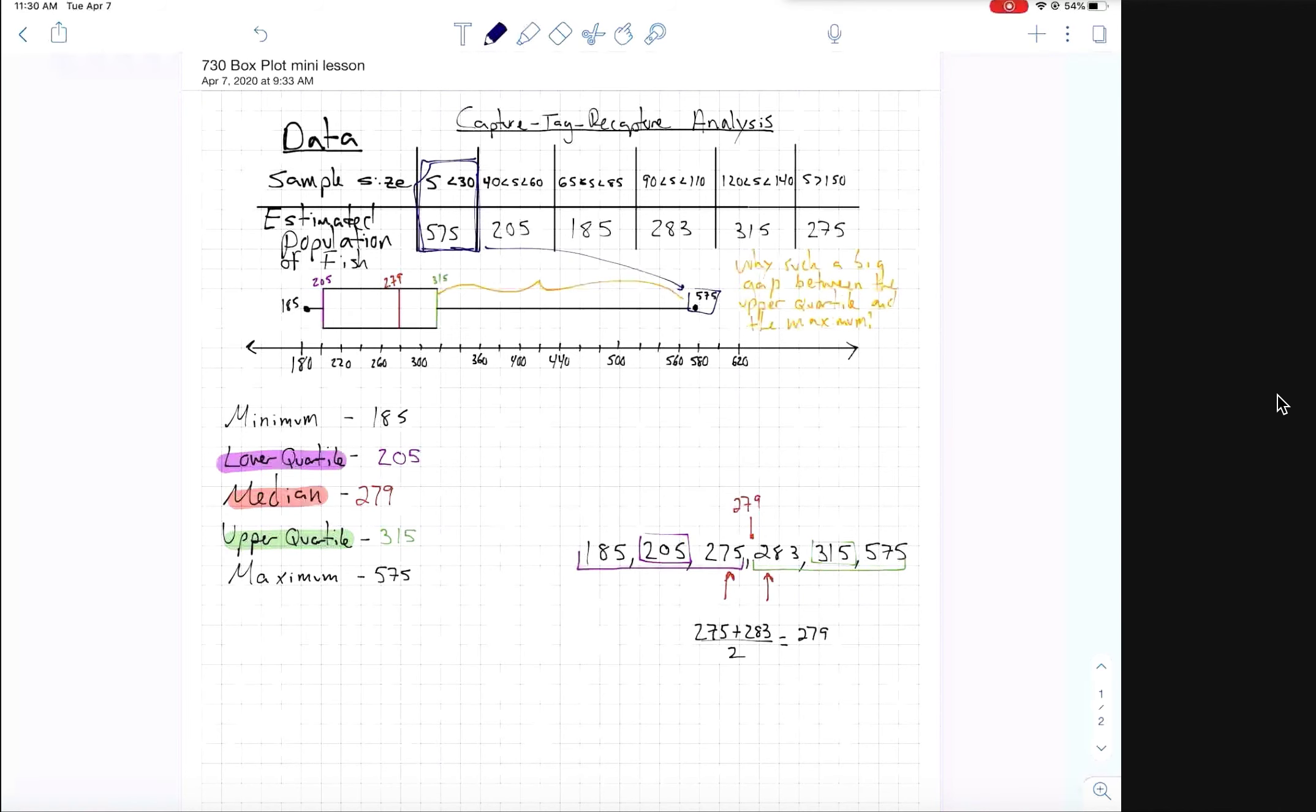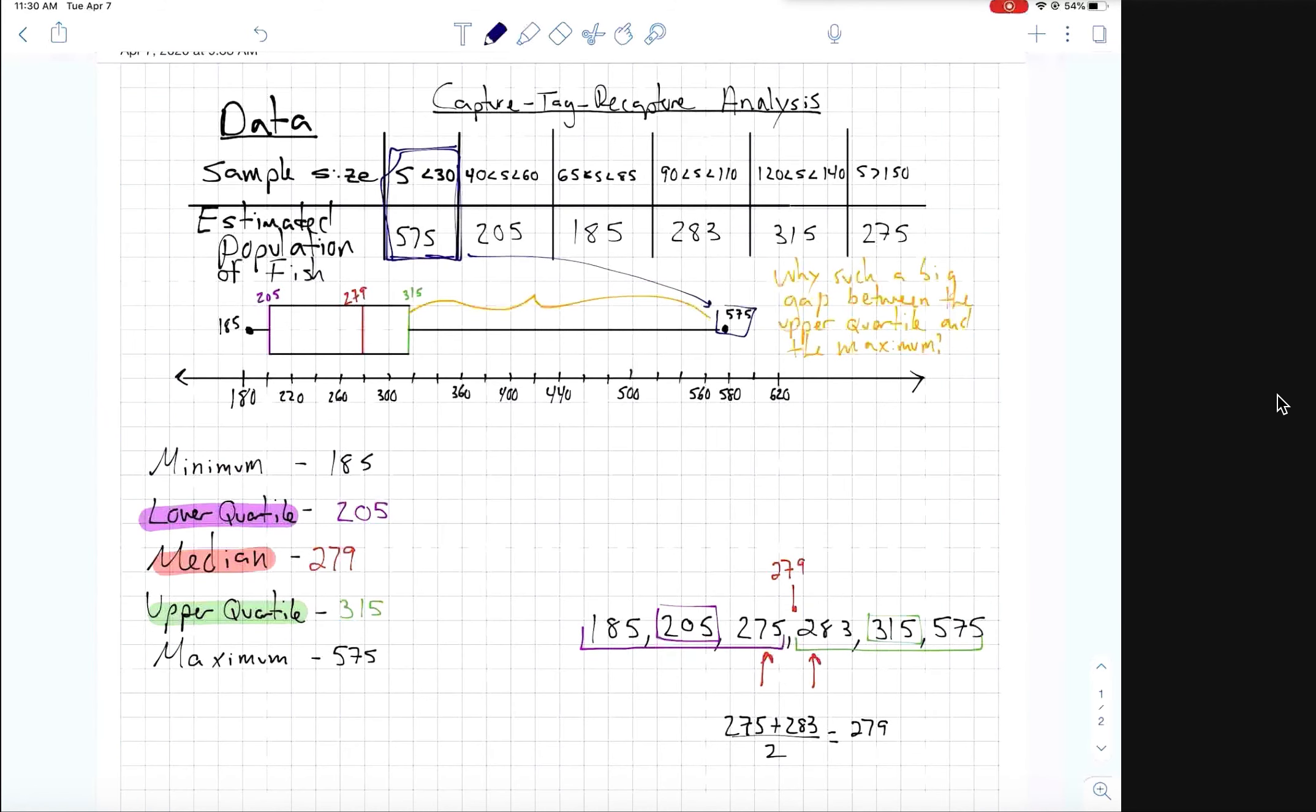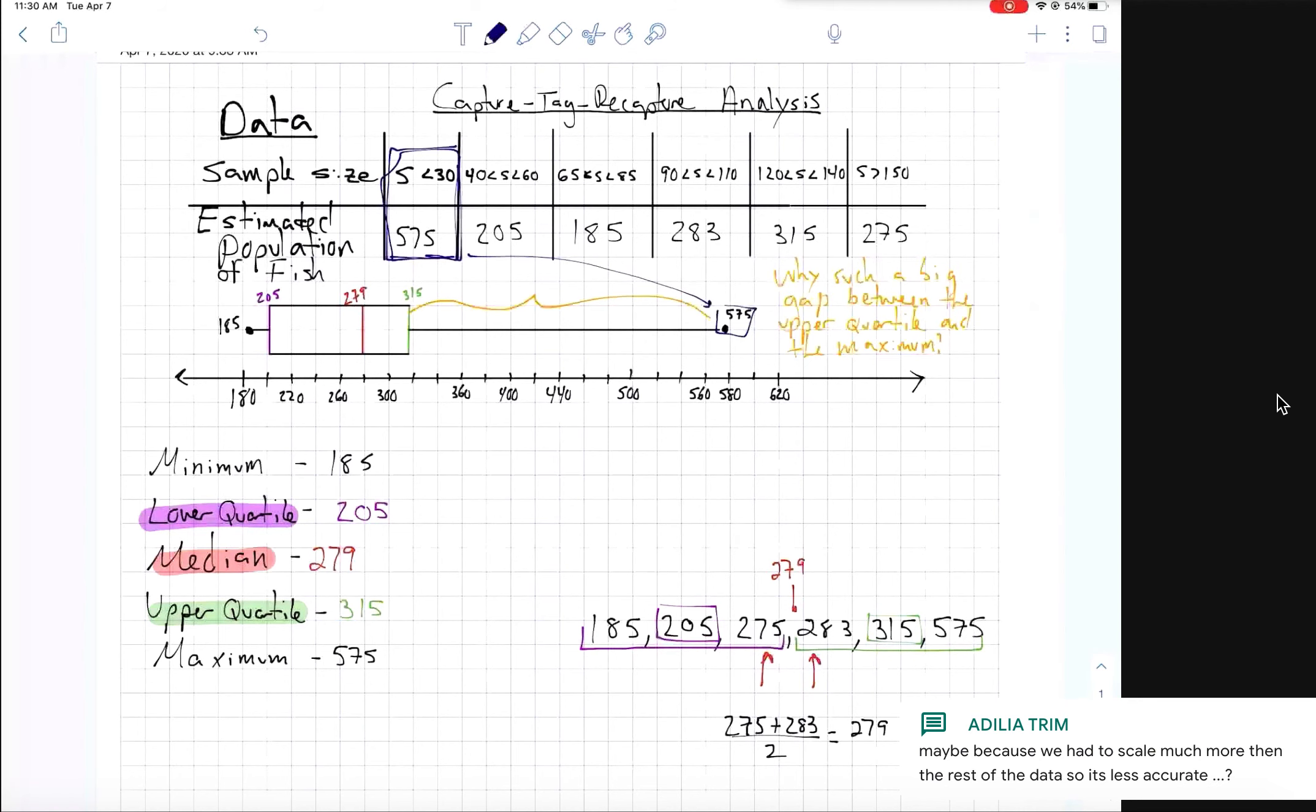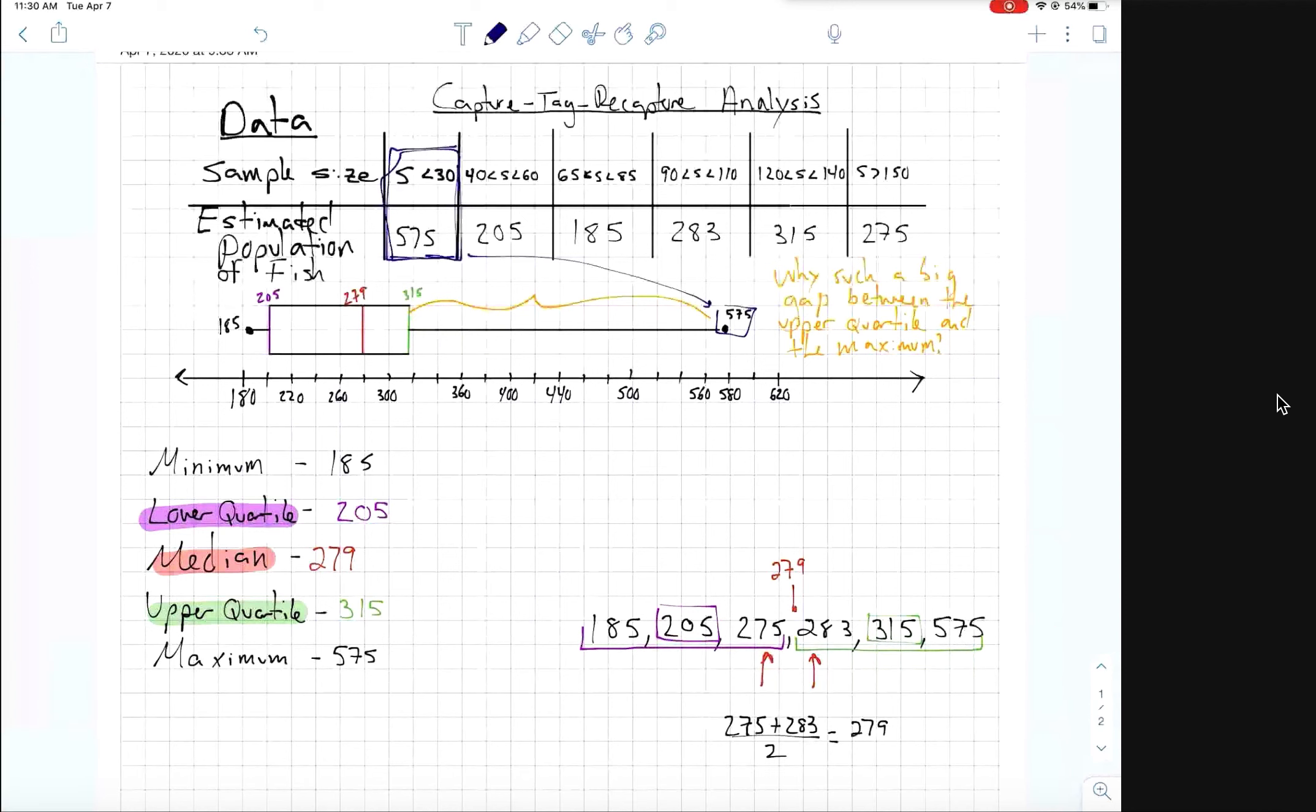Do we have any ideas why we think this small sample size of less than 30 fish created the weirdest data? Like why wasn't it the larger sample sizes that created the weird data, but the smallest sample size that created the weird data? I am waiting for some response or someone to ask a clarifying question. Maybe because we had to scale much more the rest of the data so it's less accurate. Yeah, we had to scale up more, right? We took a really small sample so we're relying on our ratio a lot more than we choose a large sample. That's a good point. Anyone add on another idea? That was a really good idea, that's absolutely true. We had to scale up more because we had such a small sample so maybe by scaling up too much we're not as accurate. Why else might a small sample size produce less accurate data?